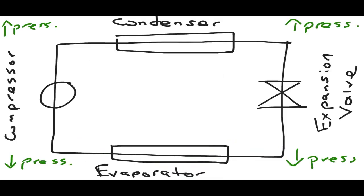A basic refrigeration system is made up of four main parts: the compressor, condenser, expansion valve, and evaporator.